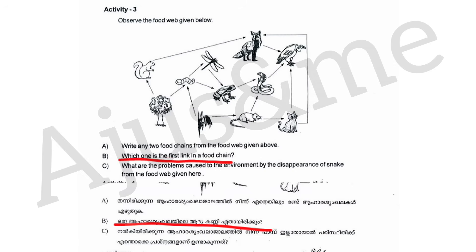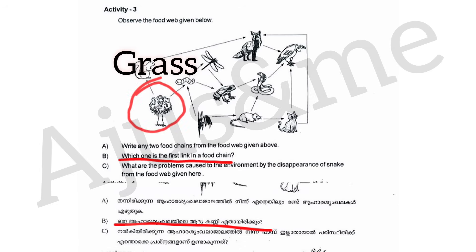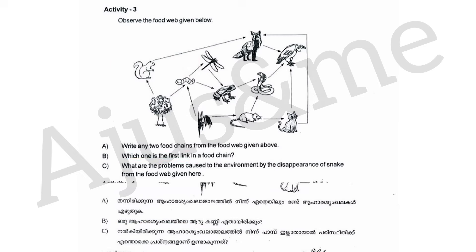Which one is the first link in the food chain? The plant and the grass are first links. What are the problems caused to the environment by the disappearance of the snake from the food web given here?